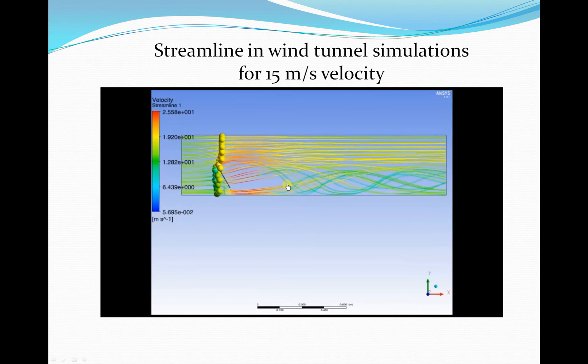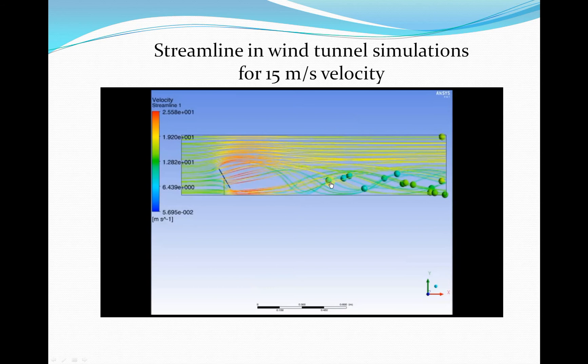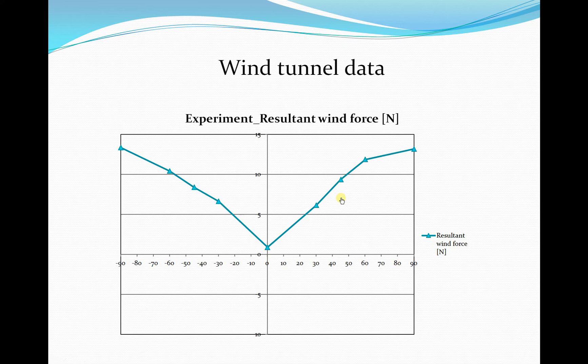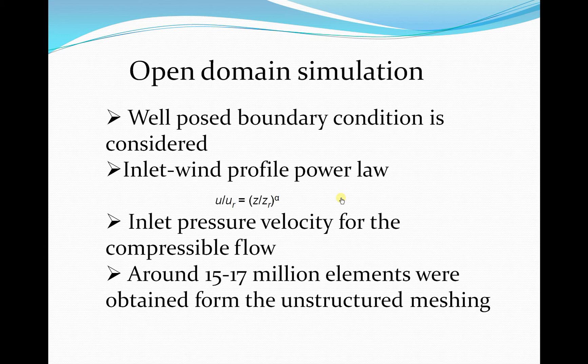This is a steady-state analysis where you can see velocity streamlines. In the downstream region there are more vortices and turbulent behavior. This wind tunnel test data was taken from the wind tunnel, and since I now know all the values from the wind tunnel test as well as my numerical calculations, I validated my approach.